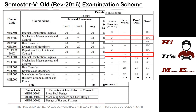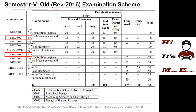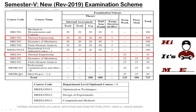The most major change in the new examination scheme is the addition of skill-based lab and project-based learning. In the 3rd or 4th semester you had mini project 1A and mini project 1B, so in the 5th and 6th semester you will also have mini project 2A and 2B.